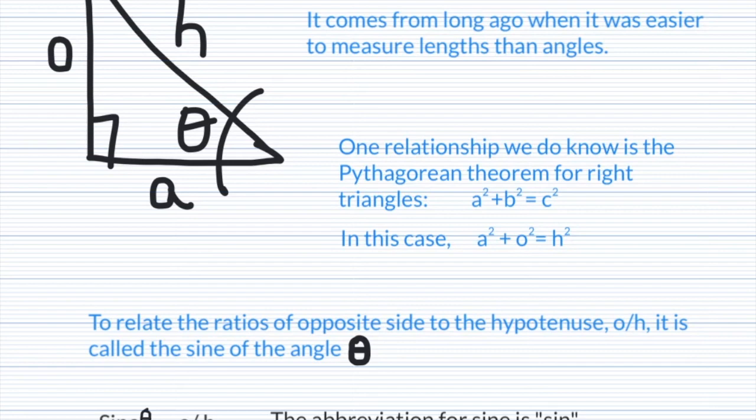To relate the opposite side to the hypotenuse for the ratio O/H, it's called the sine of the angle θ. Theta, remember, is our angle of interest. So sine of θ is opposite divided by hypotenuse. The abbreviation for sine looks like sin but it's said sine. So that's where the SO in SOH-CAH-TOA comes from.